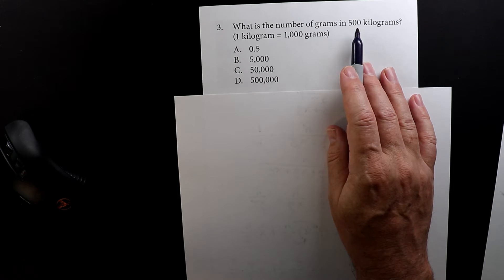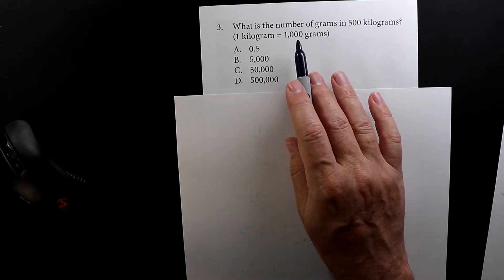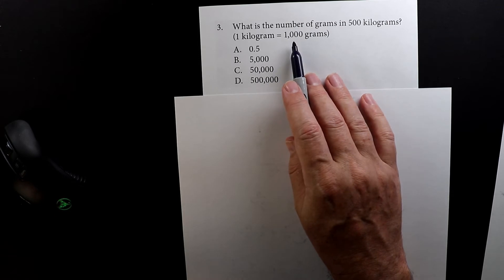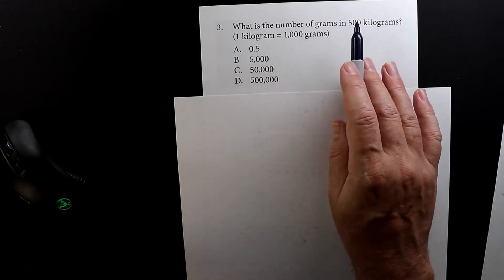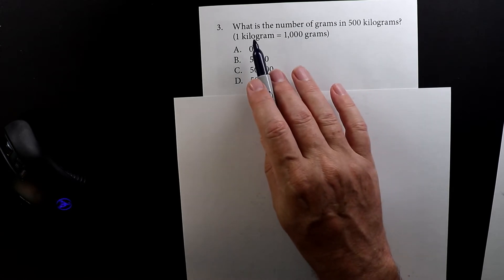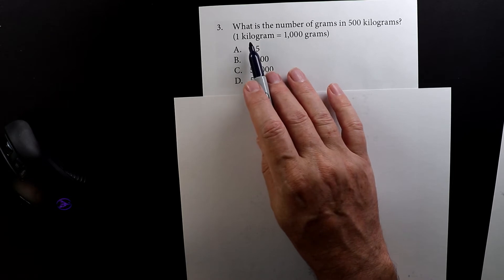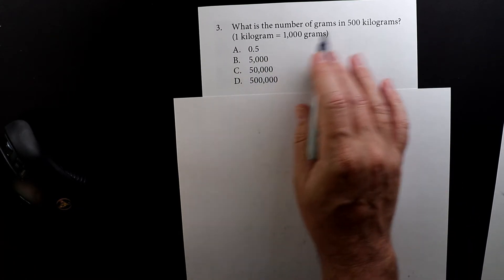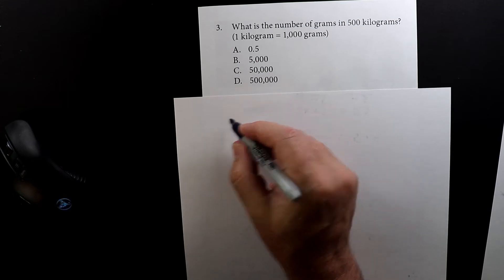I'm going to show you the way that you probably learn first, where you multiply. A thousand grams equals one kilogram, so we need to multiply this number by 500.